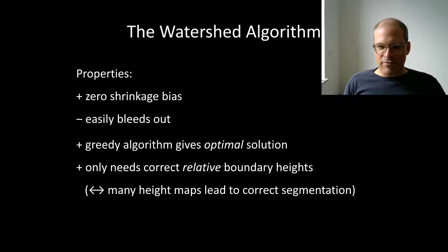And so if we remember the watershed algorithm, what's nice is it has zero shrinkage bias. So costs do not accumulate over long distances and it does not cut objects short as, for example, shortest path would do. But it easily bleeds out of imperfect boundaries. What's nice is that the greedy algorithm gives us the optimal solution to this combinatorial problem.